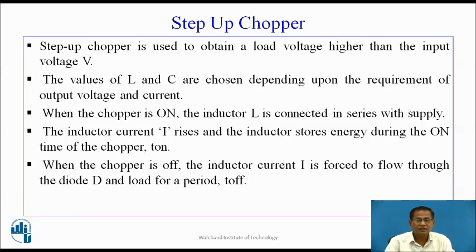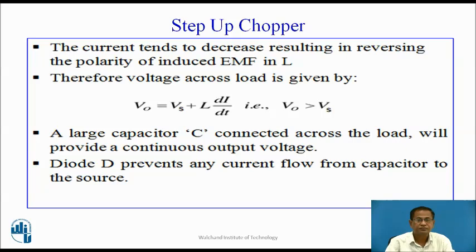When the chopper is off, the inductor current I is forced to flow through the diode D and the load for the period Toff. The current tends to decrease, resulting in a reversal of the polarity of the induced EMF in the inductor. Therefore, the voltage across the load is given by V0 = Vs + L·di/dt, where Vs is the input voltage and L·di/dt is the voltage across the inductor, so V0 is greater than Vs. That's why the circuit acts as a step-up chopper.